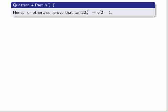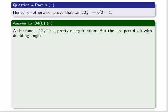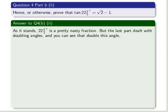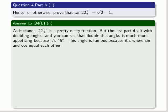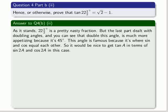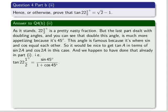So that's the end of that part. Hence, or otherwise, we have to prove that the tan of 22 and a half degrees is equal to the square root of 2 minus 1. As it stands, 22 and a half degrees is a pretty nasty fraction. But the last part dealt with doubling angles, and as you can see, the double this angle is much more appetizing, because it's 45 degrees. Now, 45 degrees is famous because it's where the sine and the cosine equal each other. So it would be nice to get tan A in terms of sine 2A and cosine 2A in this case, which we happen to have done already in part 1. So we get tan of 22 and a half degrees is equal to sine of 45 degrees, all over 1 plus cosine of 45 degrees.